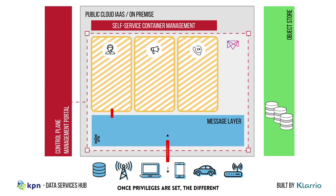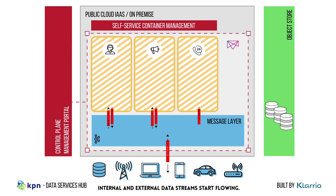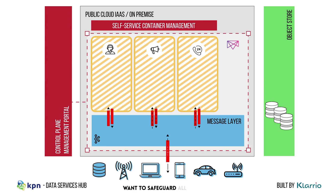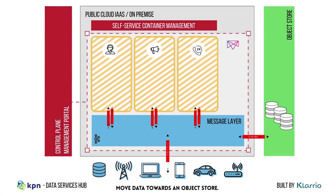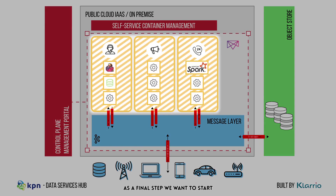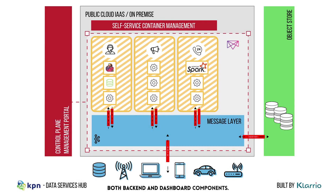Once privileges are set, the different internal and external data streams can start flowing. Let's assume that in our use case our tenants want to safeguard all raw data for future analysis or reuse. As such, tenants can also move data towards an object store. As a final step, we want to start deploying different applications for each tenant, both backend and dashboard components.